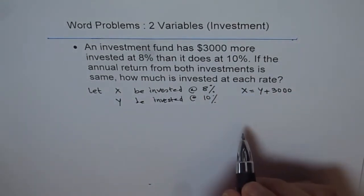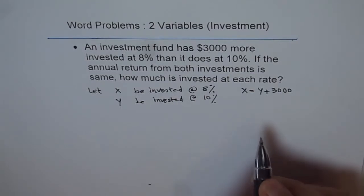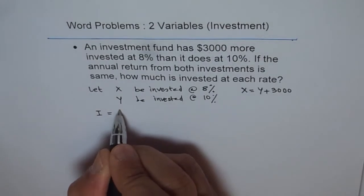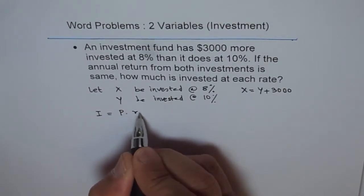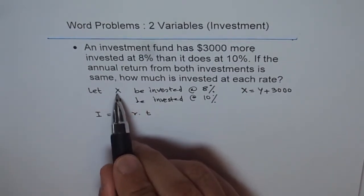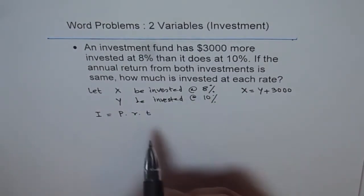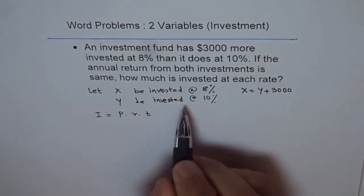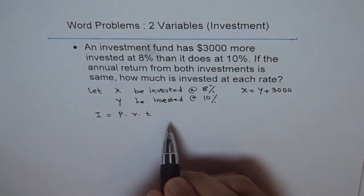Now what is the return on investment? Return on investment is interest, which is principal times rate times time. In our case, we are assuming X to be invested at 8% and Y to be invested at 10%. Therefore, our earning from 8% will be how much?